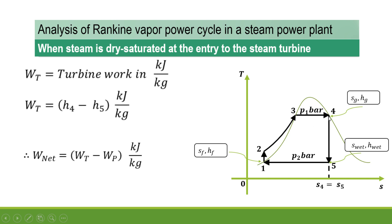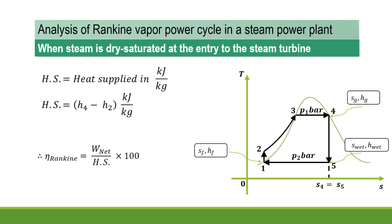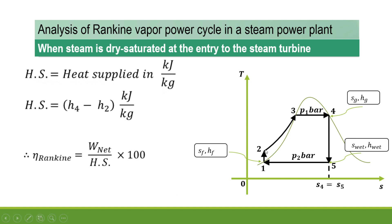Heat is supplied in the boiler from 2 to 4, so heat supplied equals H4 − H2, in kJ/kg. The Rankine cycle efficiency is then: net work divided by heat supplied, multiplied by 100. In this way, we can find the Rankine cycle efficiency for a vapor power cycle used in a steam power plant when the steam is dry saturated at entry to the steam turbine.